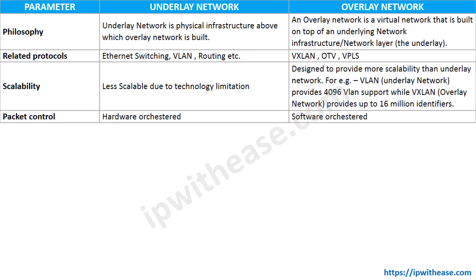Next is packet control. The underlay network is orchestrated or controlled via hardware, while overlay networks are orchestrated and governed via the help of software — which we can call software-defined. This includes SD-WAN for the WAN part and software-defined networking for the LAN or data center part, all orchestrated via software.